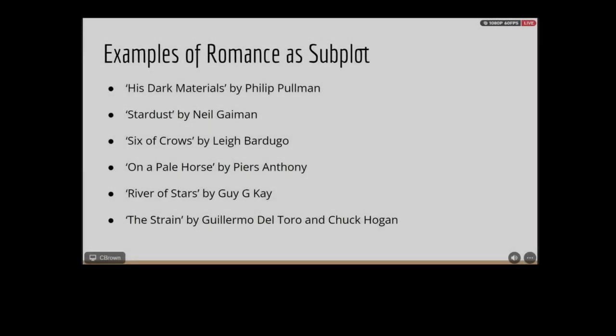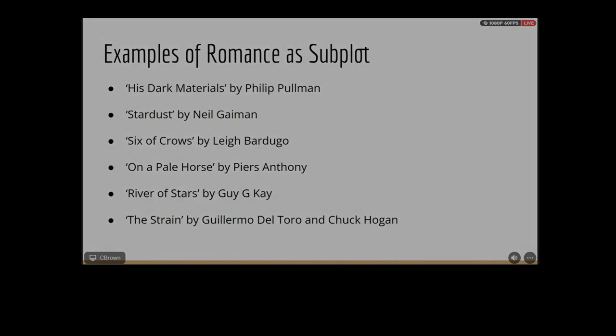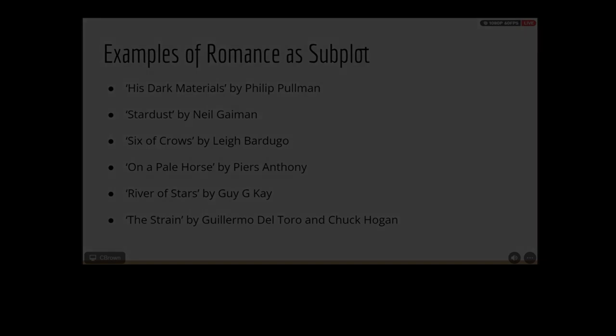Examples of romance as a subplot done well: His Dark Materials, Stardust, and my personal favorite, Six of Crows — I really like how the romance is handled there. Also The Strain, which is a modern retelling of Dracula; it has a romance subplot woven in a way that actually adds to the suspense rather than being a deterrent. River of Stars by Kay is also really good, though I'll warn you it's kind of like reading the Chinese version of Game of Thrones — very long and very poetic. Now, questions — I am ready.